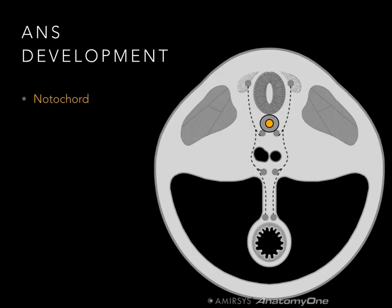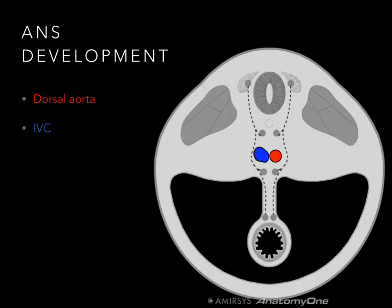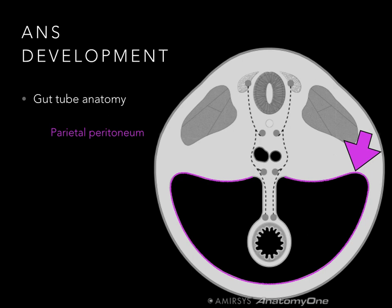The notochord is significant because in the adult, the only structure it becomes is the nucleus pulposus. The nucleus pulposus, surrounded by the annulus fibrosus, forms the intervertebral discs — an important landmark for understanding this development. For orientation, there's the dorsal aorta, the inferior vena cava, the gut tube surrounded by visceral peritoneum, the double membrane mesentery, the parietal peritoneum, and the peritoneal cavity.